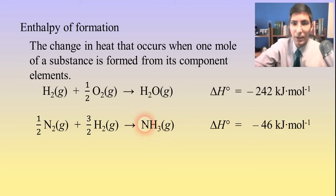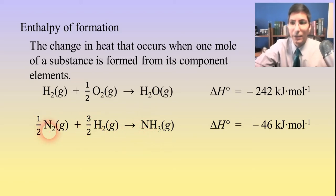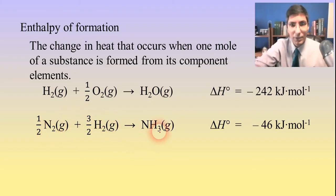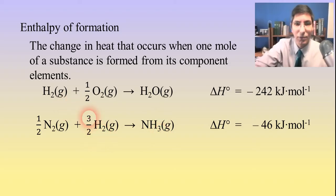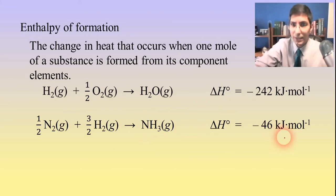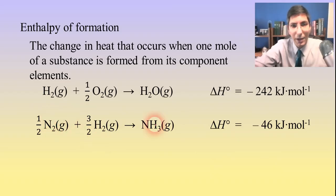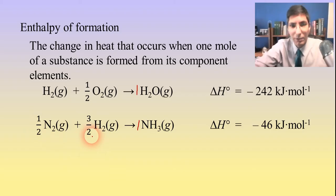Another example: the enthalpy of formation of ammonia, NH₃ in its gaseous form. You take half a mole of N₂ — since nitrogen's simplest form is N₂ — and three-halves moles of H₂ to get the three hydrogens, producing one mole of NH₃. The ΔH is negative 46 kilojoules per mole. The equation must be written so the elements combine to give exactly one mole of the product, which is why we sometimes get fractional coefficients.